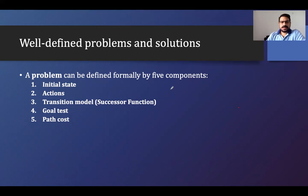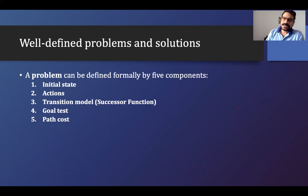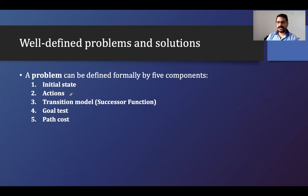A well-defined problem and solution — a problem can be defined formally by five components. Based on these five components we'll define the problem. The first is the initial state. Any problem will have some initial state, meaning we have to start somewhere — what is the state where we're starting?